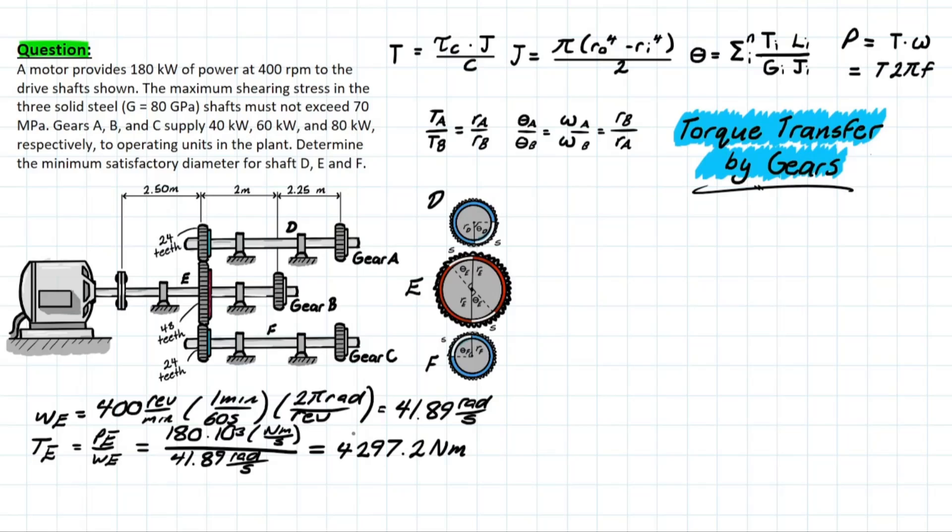We know that the whole point of this problem is to solve for diameters, so we're going to have to bring this back to our original formula in order to back solve for the diameter in the polar moment of inertia equation. So, that being rearranged, we have something that looks like this.